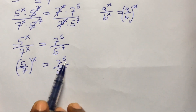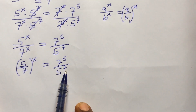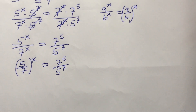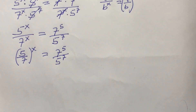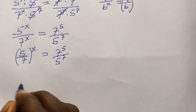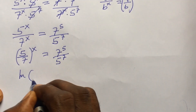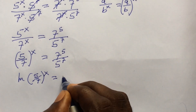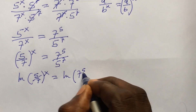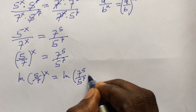Note that we cannot apply that same index law to the right-hand side because the powers and bases are different, so we leave the right-hand side as is. Now we take the ln of both sides. So we have: ln of (5/7) to the power of x, equals ln of (7 to the power of 5 over 5 to the power of 7).